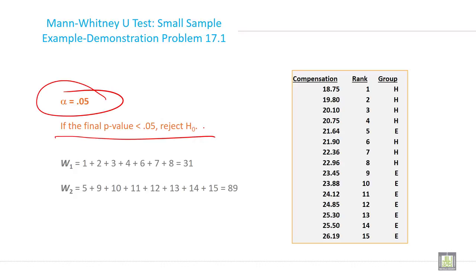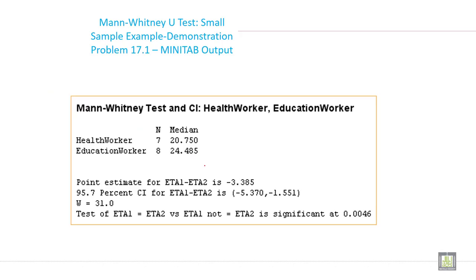So here W1 is 31 and W2 is 89. Here is the output from the Minitab test. Healthcare worker n equals 7 with median 20.75, while educational worker is 8 with median 24.485.